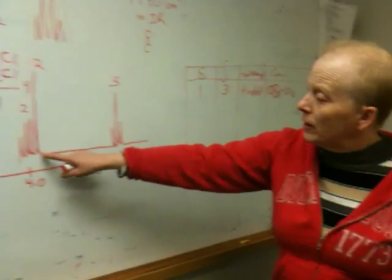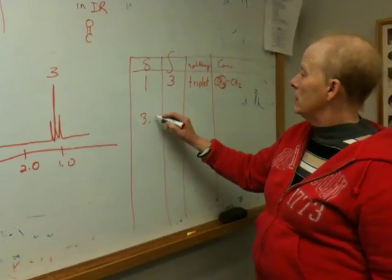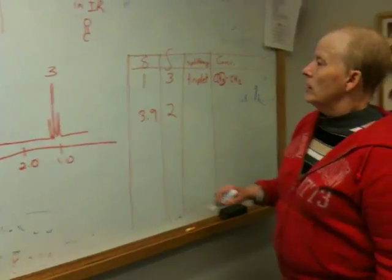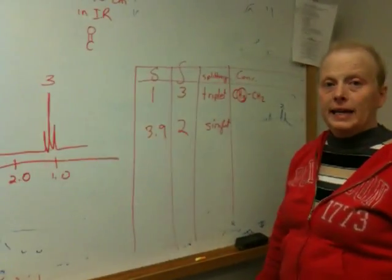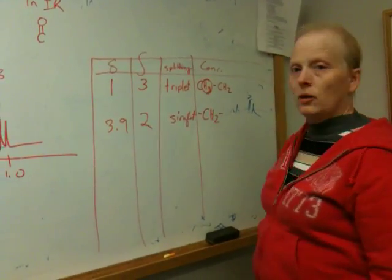So the first thing I run into is the singlet. So at about 3.9, I have an area of two. It's a singlet. How do we interpret that? The way we interpret that is a CH2 group.